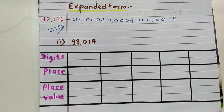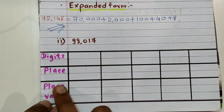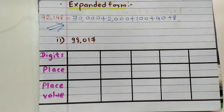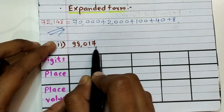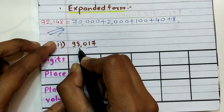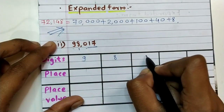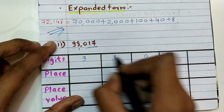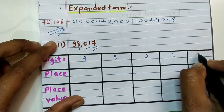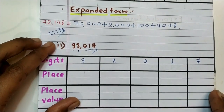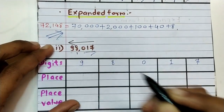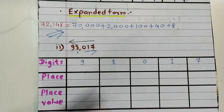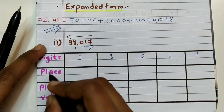98017 is ninety-eight thousand and seventeen. First digit is nine, second digit is eight, third digit is zero, fourth digit is one, and our last fifth digit is seven. Place value is calculated from right-hand side to left-hand side.